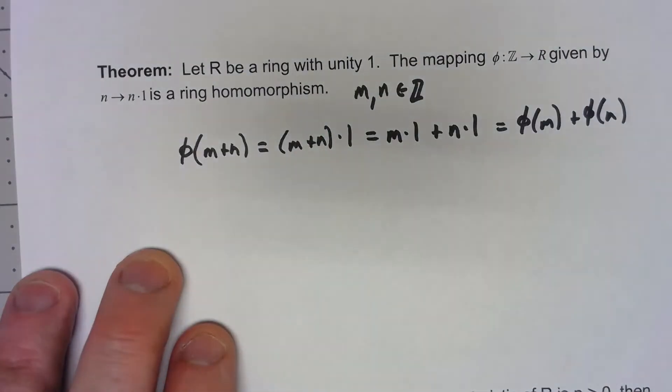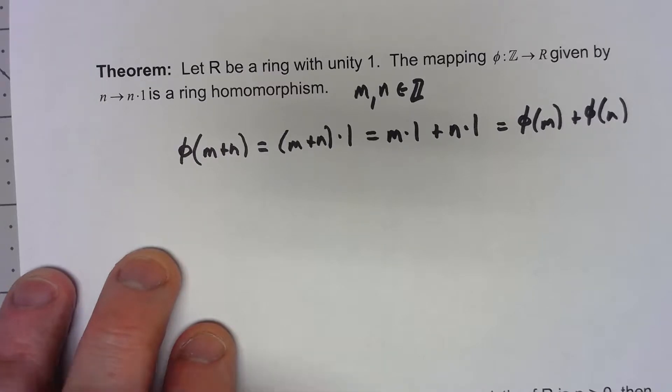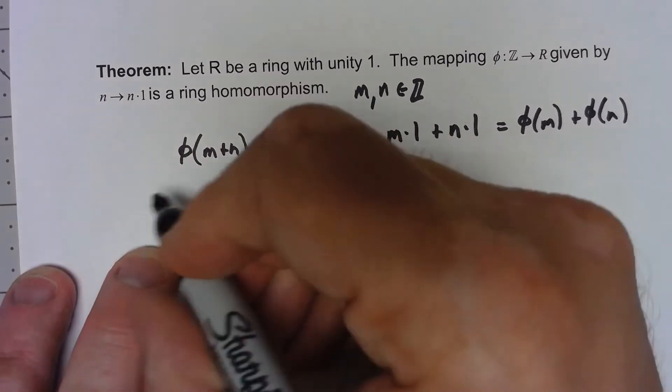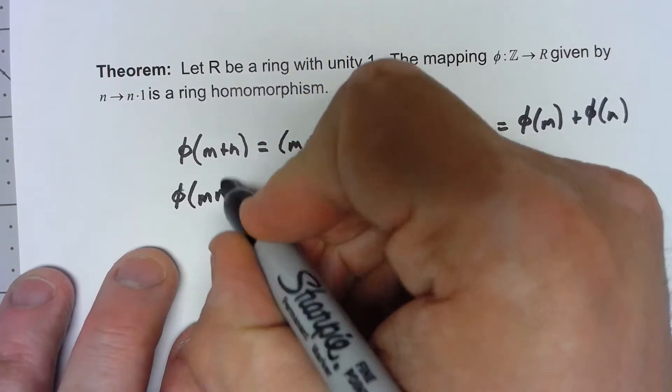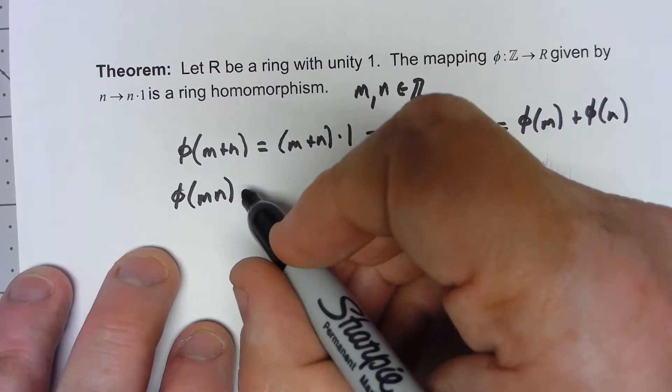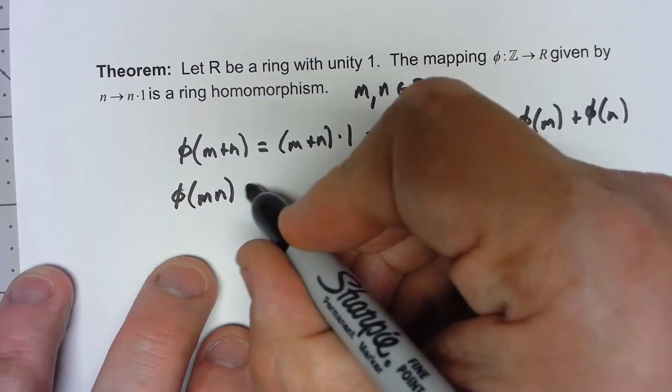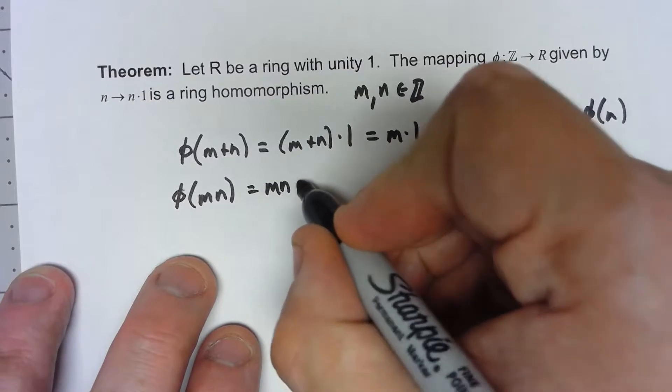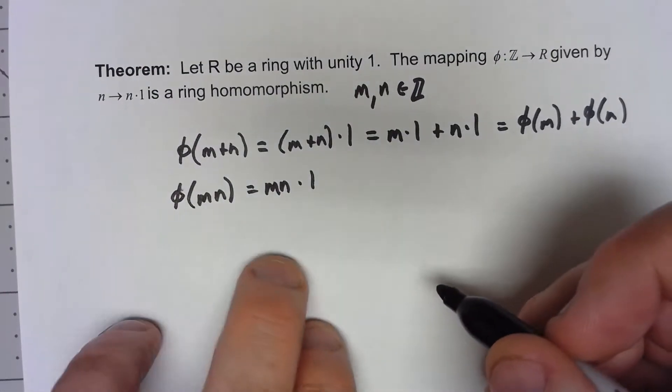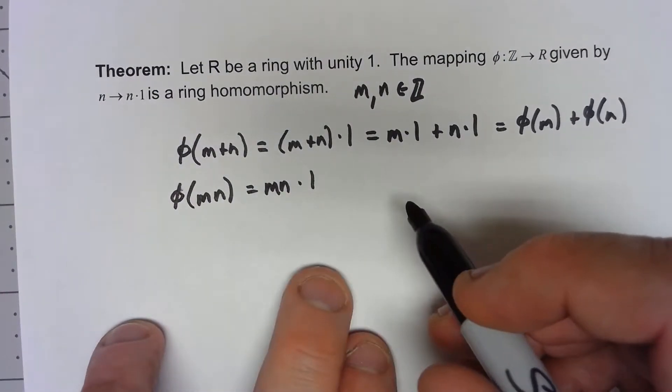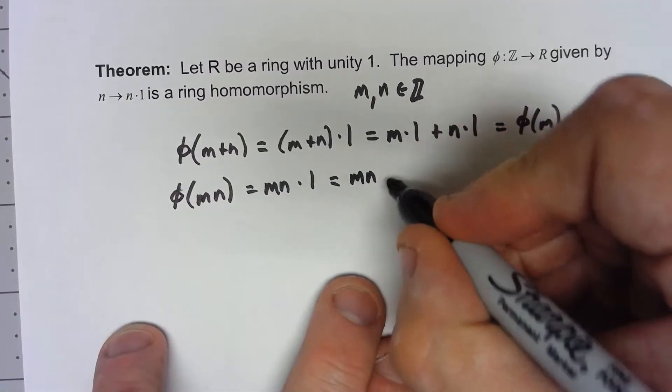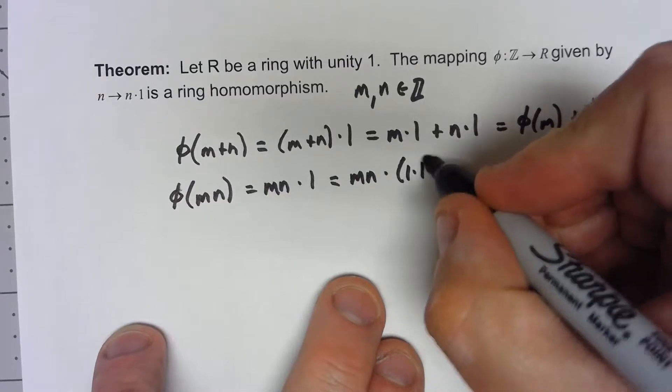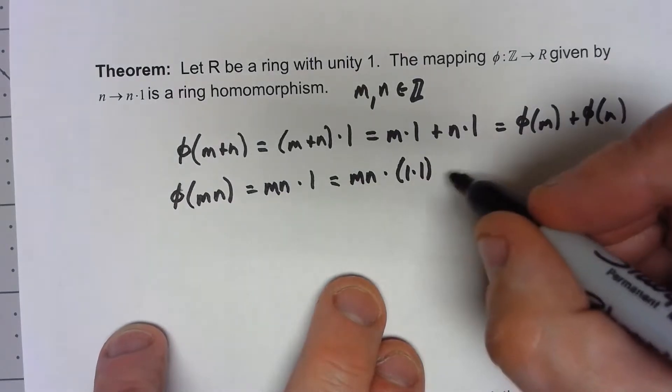Now multiplication. Now multiplication is not a whole lot harder but it does involve a few things that we've looked at previously. So if I have φ of m times n, again by definition that would be mn times 1. Well that's equal to mn times 1 times 1, since 1 times 1 has to be 1.